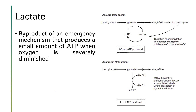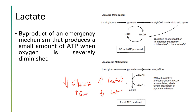Lactate is a byproduct of the emergency mechanism of energy production. It is a product of pyruvate conversion — the end product of glycolysis (breakdown of glucose) is pyruvate, which is then converted to lactate. Therefore, when glucose is low, lactate is high; when glucose is high, lactate is low. Lactate is the byproduct of the emergency mechanism that produces ATP.